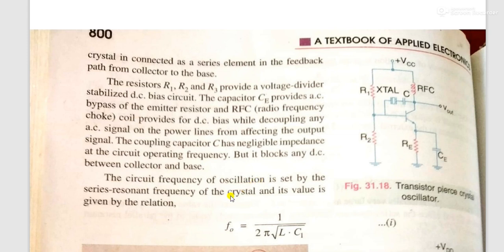The circuit frequency of oscillation is set by the series resonant frequency of the crystal. As in the equivalent circuit, we have seen a crystal is equivalent to RLC in series combination. This series combination is in parallel with capacitor C2. The circuit provides the resonant frequency which is equivalent to the series resonant frequency of the crystal.